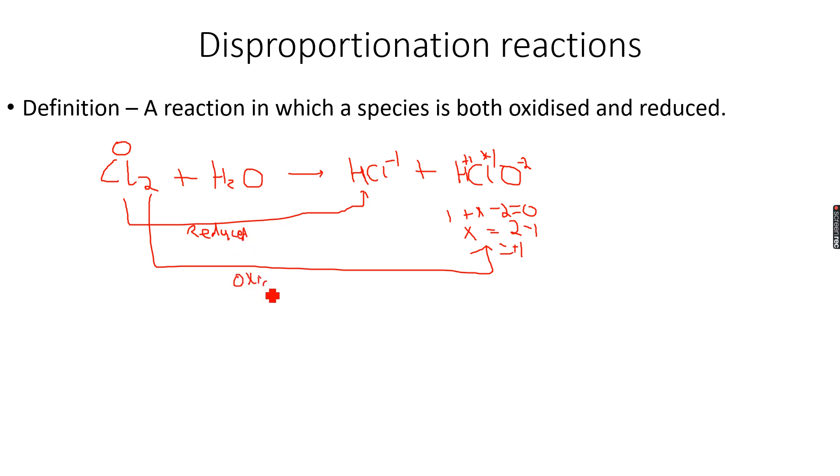So this is called a disproportionation reaction because chlorine is both reduced and oxidized. Just remember that a disproportionation reaction is one in which a species is both oxidized and reduced.